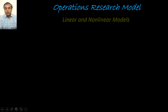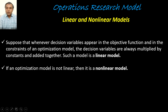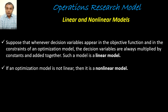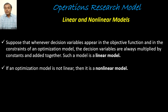Next are linear and non-linear models. In a linear model, decision variables in the objective function and constraints are always multiplied by constants and added together — the relationship between variables is linear. A decrease in one variable has a proportional linear effect on another. When the relationship between variables is not linear, the optimization model is a non-linear model. In Operations Research, we discuss both linear and non-linear models.